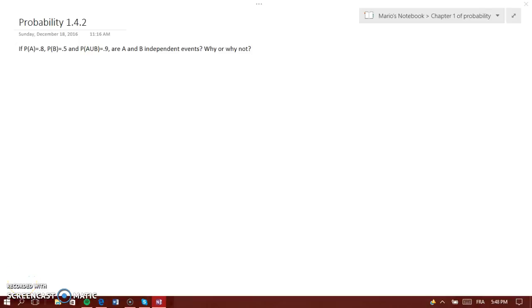Welcome back for another example. If P(A) equals 0.8 and P(B) equals 0.5, and P(A union B) equals 0.9, are A and B independent events? Why or why not? Now I'm going to be straightforward with that answer.